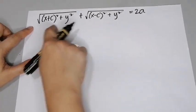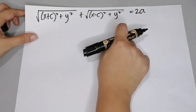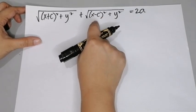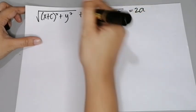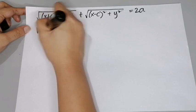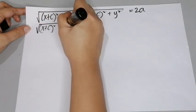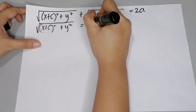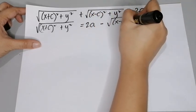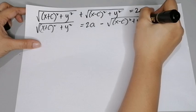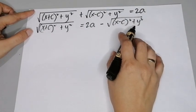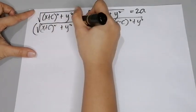Given this equation, we can move one expression to the other side. So we have the square root of (x+c)² + y² is equal to 2a minus the square root of (x−c)² + y². We have to get rid of the radical signs, so we have to square both sides.